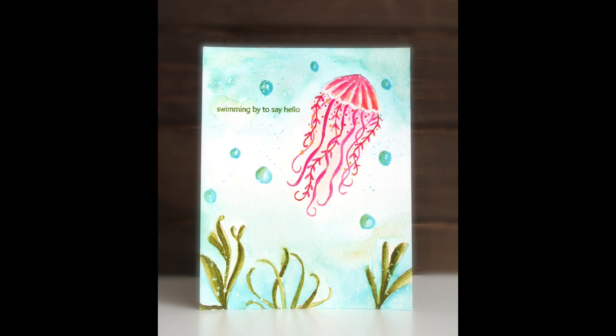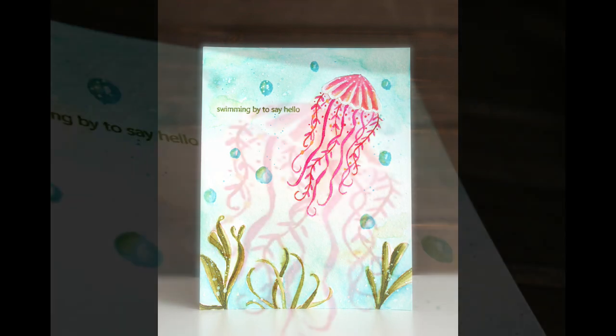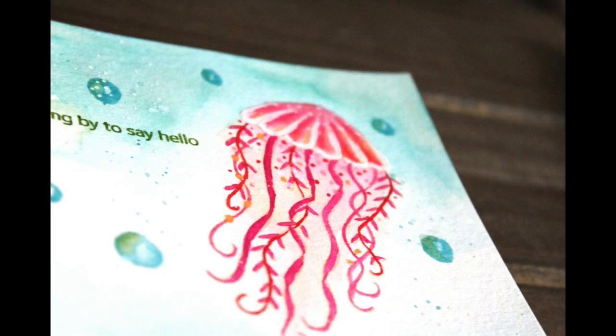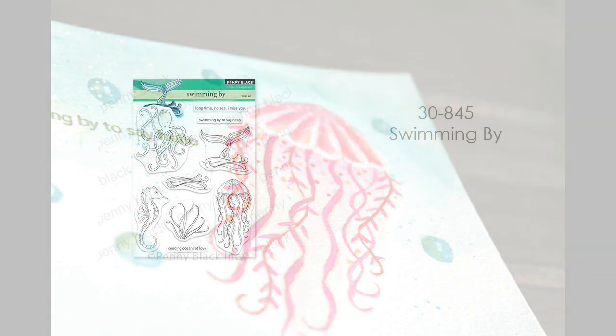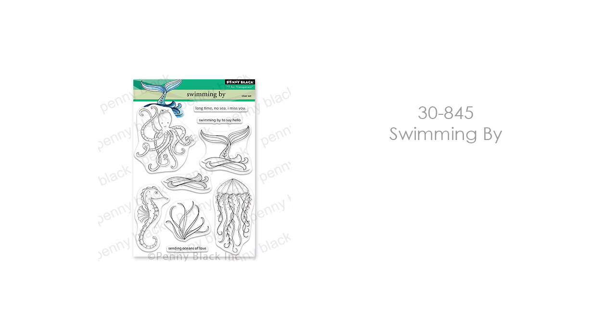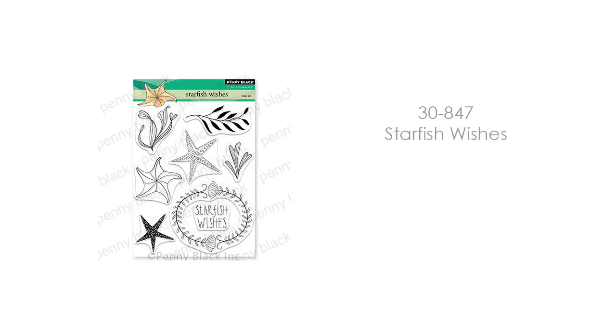So here is a look at the card that we will be creating today. I just love the bright pink of this image and the looseness and fun of the underwater bubbles and watercolor scene. The stamps we'll be using today are from our new transparent stamp sets, 30-845 Swimming By, as well as some of the coral stamps from 30-847 Starfish Wishes.